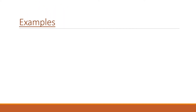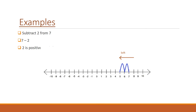Let's see some examples. Subtract 2 from 7, that means 7 minus 2. Here 2 is positive, so we need to move left on the number line. We start from 7 and move 2 steps left, and we reach 5. So 7 minus 2 is equal to 5.